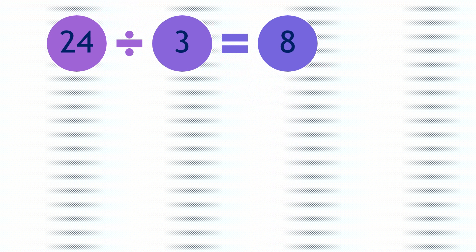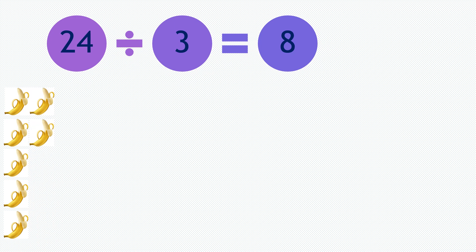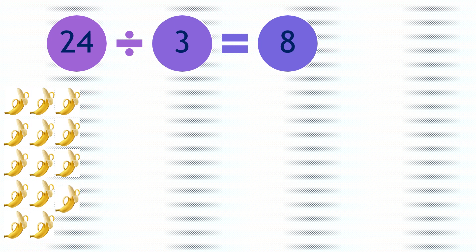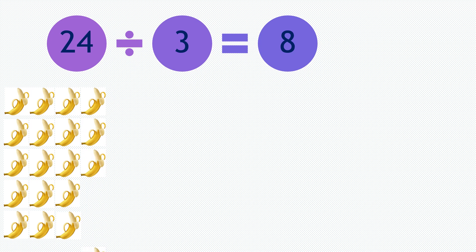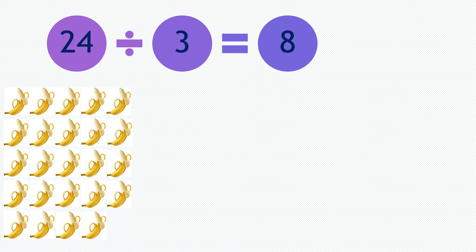Moving on to our next question. 24 divided by 3 equals 8. If you have 24 bananas — 1, 2, 3, 4, 5, 6, 7, 8, 9, 10, 11, 12, 13, 14, 15, 16, 17, 18, 19, 20, 21, 22, 23, 24 — and if you divide them by 3 monkeys.